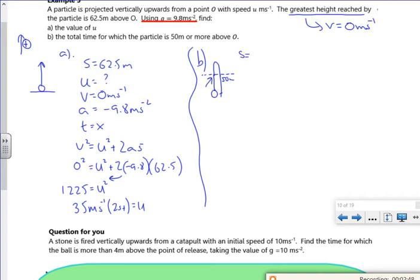So if I set s as 50 meters, u I know now is 35, v I've got no clue about, a is minus 9.8 meters per second squared. So I don't know v because I don't know v at 50 meters. t is what I want. So I suspect I'm going to get a quadratic that I'll have to solve and then just see the difference between the t values.